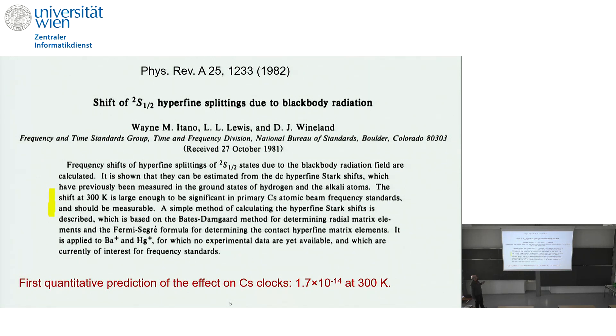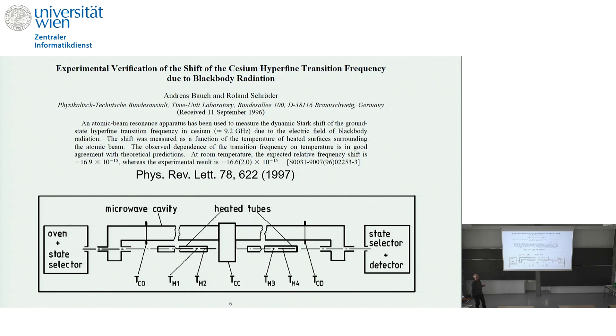They made the calculation. They estimated the shift for the S1/2 hyperfine splitting, specifically of course for the cesium clock. So the cesium clock has the S1/2 ground state. And they point out that the shift at 300 Kelvin is large enough to be significant in primary cesium atomic beam frequency standards and should be measurable. And they calculated it and turned out to be on the order of the relative shift to be about 1.7 times 10 to the minus 14 at room temperature. These people, Dave Wineland, had worked on the primary cesium clocks at NIST at the time. And they knew that the uncertainty budget of those clocks was in the low 10 minus 14 range. So in principle that's why they said it should be this relevant effect and it should be measurable. But nevertheless it turned out to be very tricky. It took more than a decade until somebody really succeeded in measuring it, and this was at PTB.